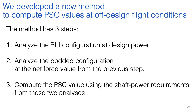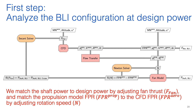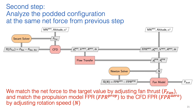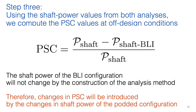To satisfy these requirements, we developed a new off-design analysis method with three steps. First, we analyze the BLI configuration at off-design flight conditions, adjusting the fan thrust to match the shaft power of the BLI fan to the shaft power at cruise conditions. We also adjust the rotation speed of the propulsion model to match the fan pressure ratio to the CFD value. Secondly, we analyze the podded configuration, adjusting the fan thrust to match the net force on the whole body to the result from the BLI analysis, and similarly matching fan pressure ratio values. Finally, we compute the power saving coefficient values using the shaft power requirements from these simulations.